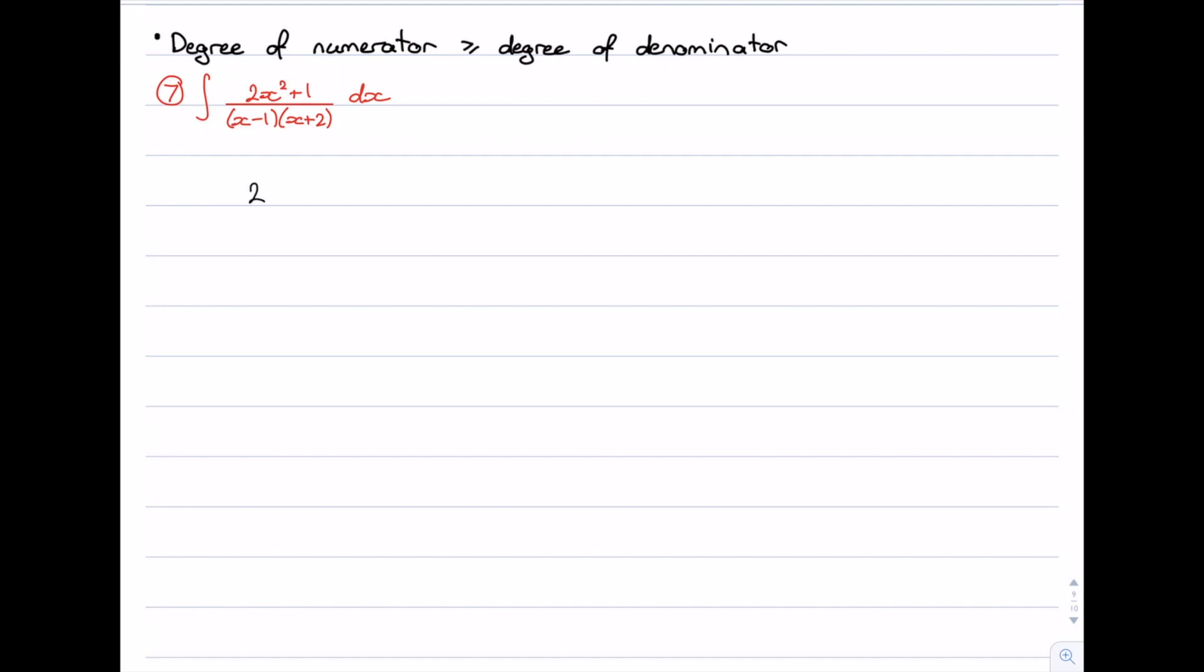So if we want to do our decomposition on our integrand, 2x² + 1 over (x - 1)(x + 2), we want to do a partial fraction decomposition on that.